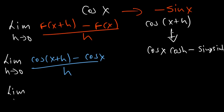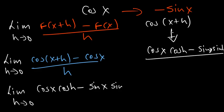So that's going to be cosine of x cosine of h minus sine of x sine of h minus the cosine of x, to be divided by our h.